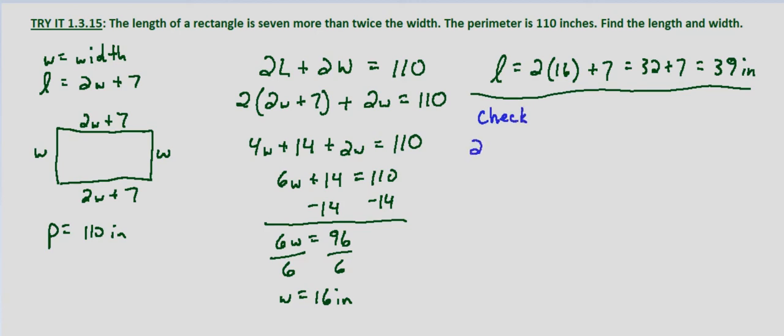Does 2 times 39 plus 2 times 16, does that indeed equal 110? We get 78 is 2 times 39 plus 30.